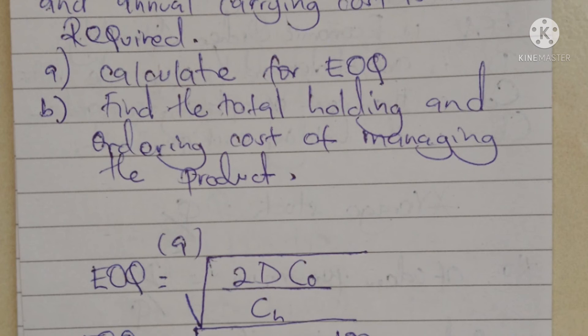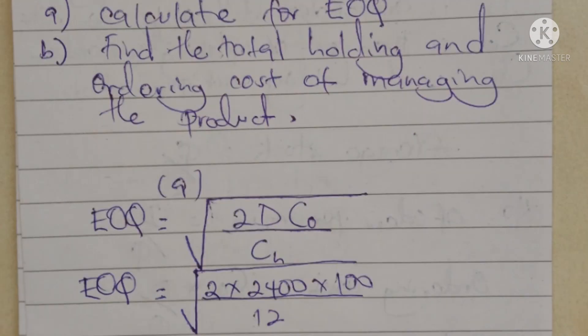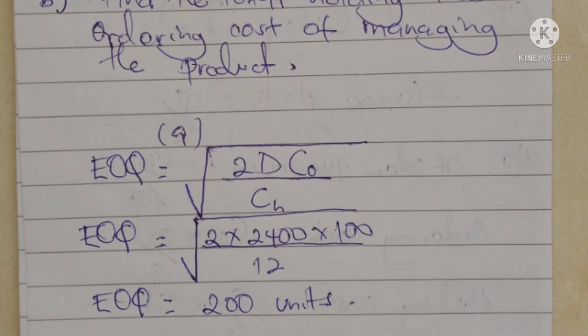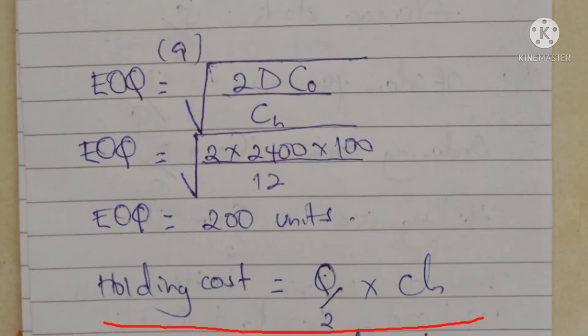The formula for EOQ is: square root of (2 × D × C₀ / Cₕ), where D is the annual demand, C₀ is the ordering cost, and Cₕ is the holding cost. Substituting in: square root of (2 × 2,400 × 100 / 12). The calculator gives us an EOQ of 200 units.